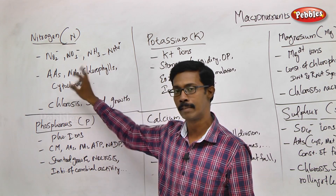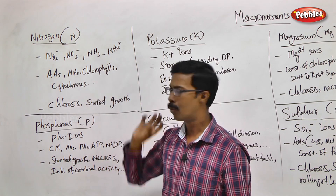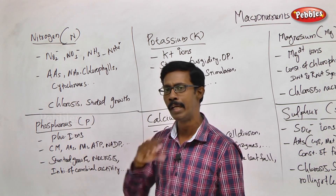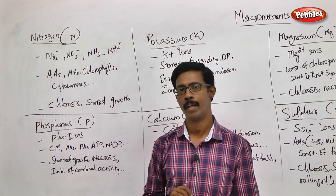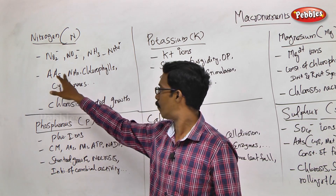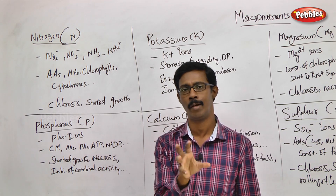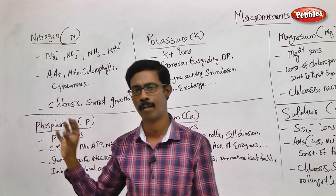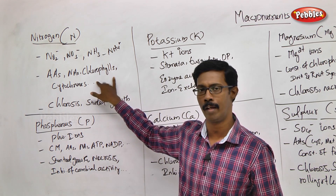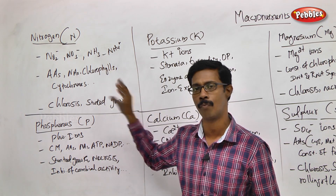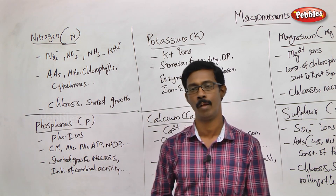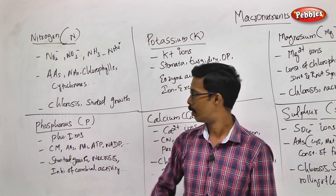Nucleic acids contain nitrogen as part of their structure. In chlorophyll, nitrogen is a major component. In cytochromes, nitrogen is also a major component. So if nitrogen is absent: there is no chlorophyll, therefore no photosynthesis; there are no cytochromes, therefore no electron transport chain and no ATP synthesis.